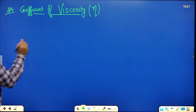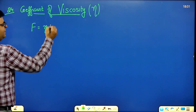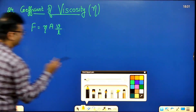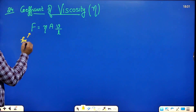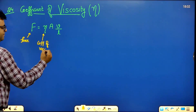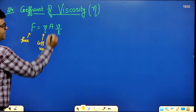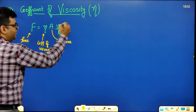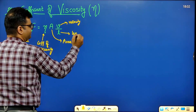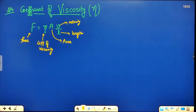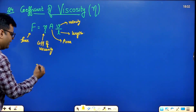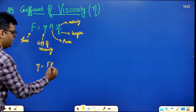The formula for viscous force is F = η·A·(v/l), where F is force, η is coefficient of viscosity, A is area, v is velocity, and l is length. So η = F·l/(A·v).